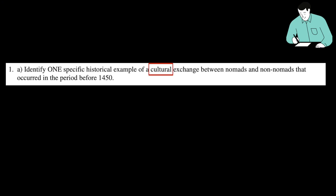For letter A, right off the bat: culture. Culture's a massive term — it can really include almost anything. Think of it as the culmination of all the institutions in society and what they produce. When you see the word culture, be happy. You can argue that most things fit under culture. So one cultural exchange — just identify one. You could name any technology or religious exchange: gunpowder, Islam, Buddhism, all that stuff.